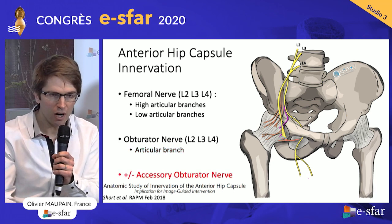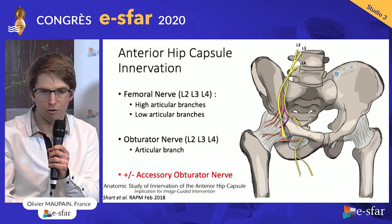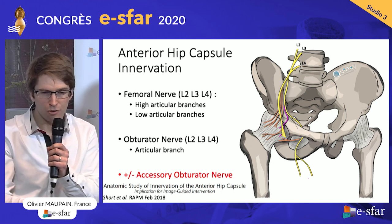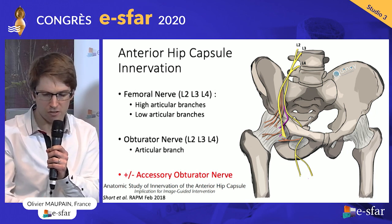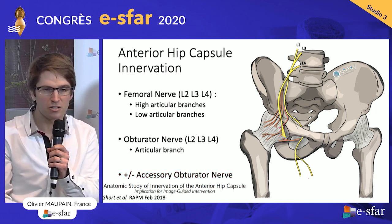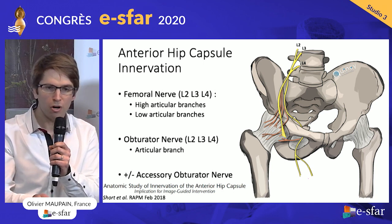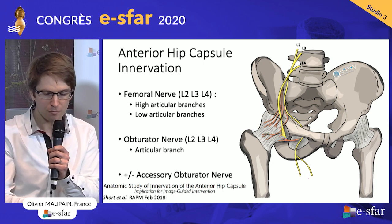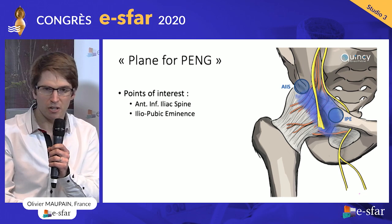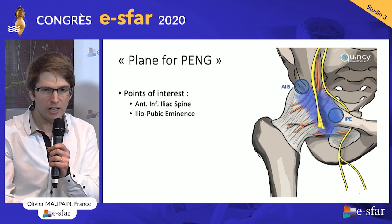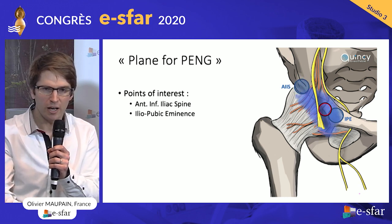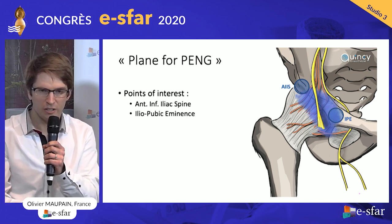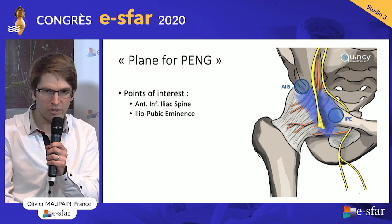The obturator nerve also gives articular branches after emerging from the obturator canal. And sometimes you have an accessory obturator nerve in about one-third of patients in cadaveric studies. This nerve runs over the bone of the pelvis, just close to the iliopubic eminence. So the question is where to inject our local anesthetic to block most of these articular branches. There is an interesting region on the pelvis between the anterior inferior iliac spine laterally and the iliopubic eminence medially. If you put your local anesthetic here, you can reach almost all these sensitive branches that supply the anterior hip capsule.